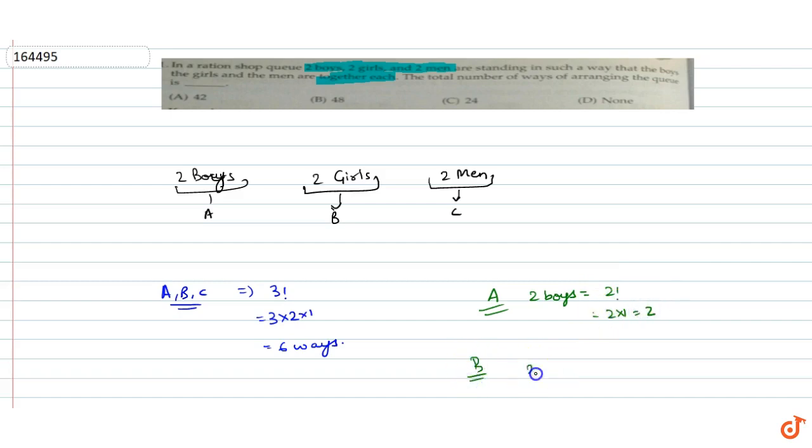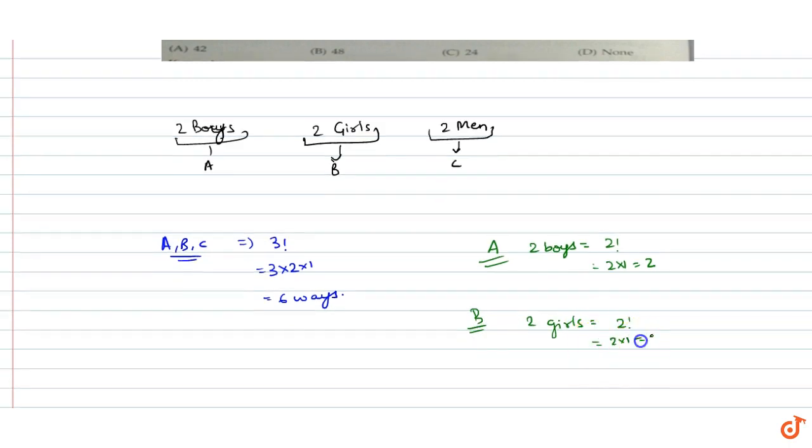Similarly B, we have two girls. So two girls can be arranged in 2 factorial ways. That is 2 × 1, which is 2.